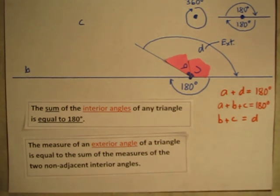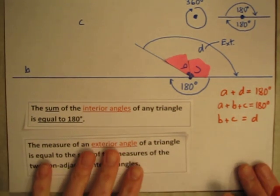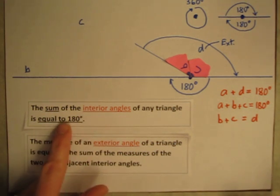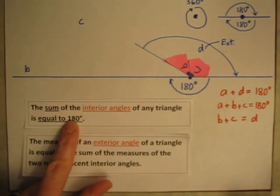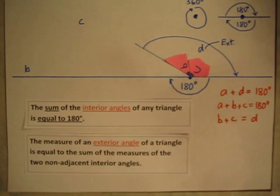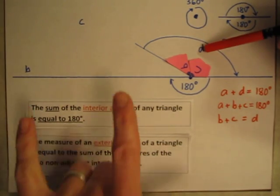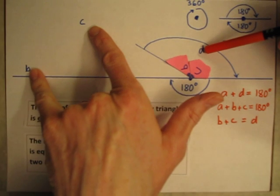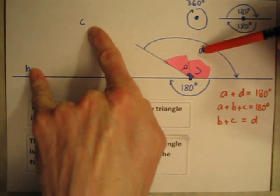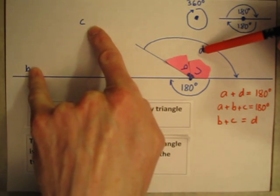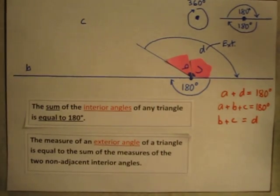Hopefully that makes sense, and hopefully you've learned a few things: the interior angles of a triangle add up to 180 degrees, and this exterior angle D is equal to the two non-adjacent interior angles added together. Thank you.